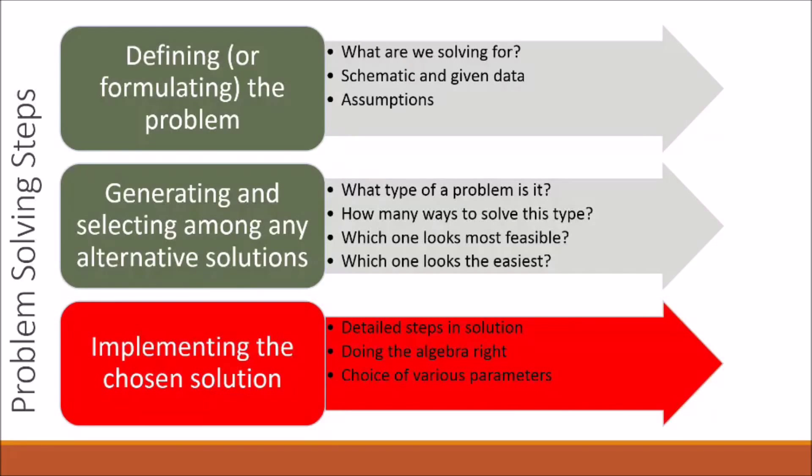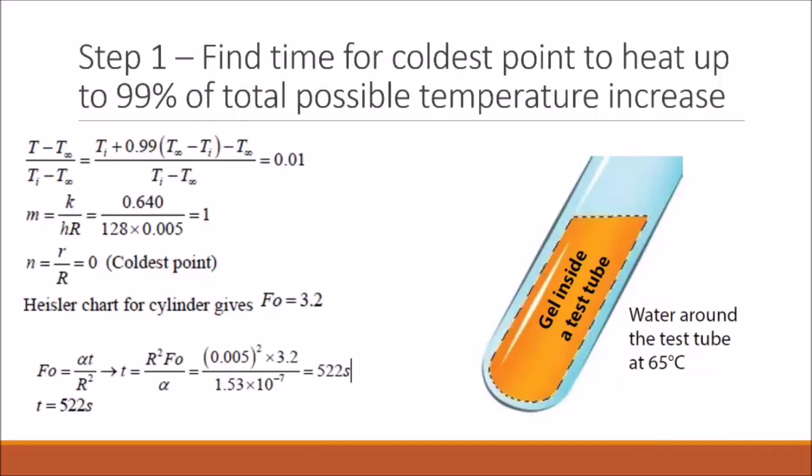Now we can implement our chosen solution and solve the rest of this problem. The first question asks us to find the time for the coldest point in our tube to heat up to 99% of the total possible temperature increase.